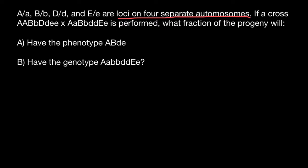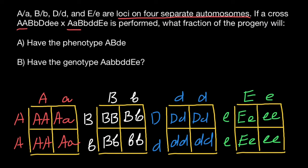Because all four loci are on separate autosomes, we can work with each allelic pair independently. For example, parent one is homozygous dominant for gene A and parent two is heterozygous. I've prepared four Punnett squares representing one parent and the second parent for each allelic pair. For the first question about phenotype: what is the probability that progeny would show the dominant phenotype for gene A?